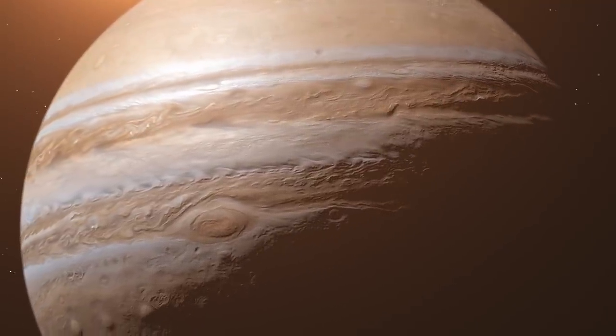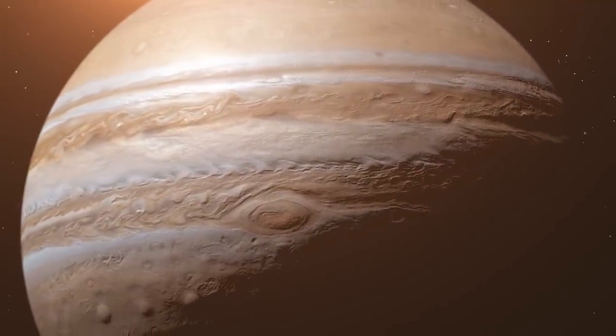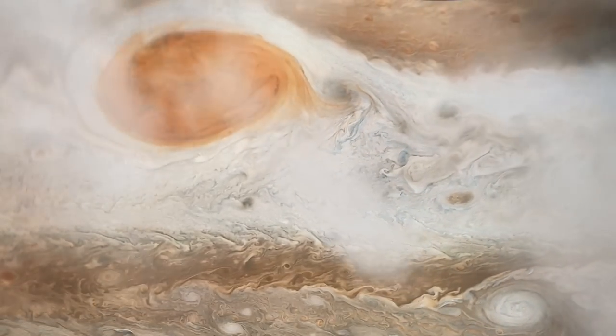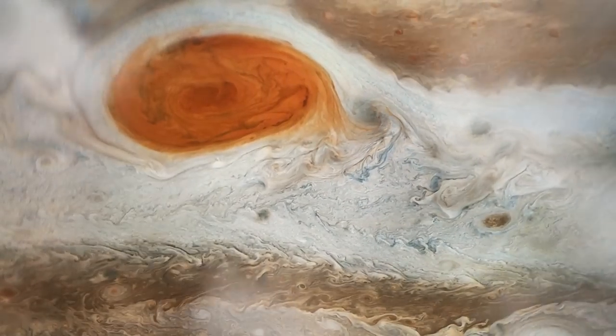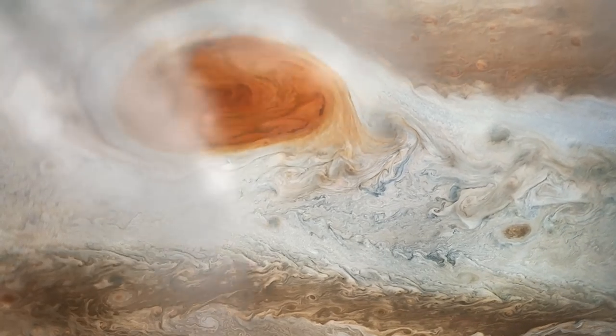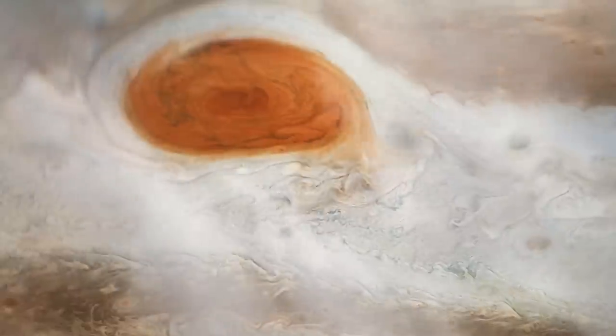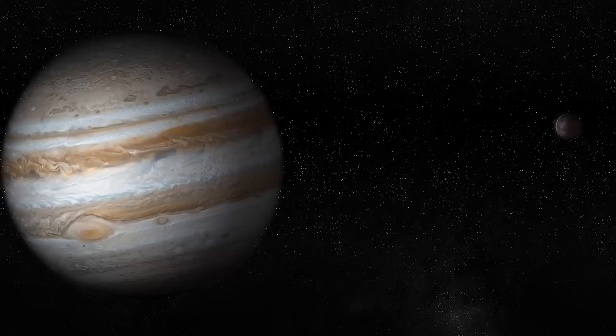Jupiter has a tumultuous weather system. Strong turbulence, even storms with violent winds of 600 kilometers an hour, or 370 miles per hour, appear along these colored bands. In addition, a red spot as large as three to four times our Earth is visible. It is a giant tornado and carries a lot of dust.